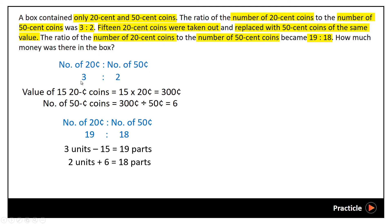Some of you might be wondering why do I want to use units and parts, instead of units and units? The reason is because the value of 1 unit here would be different from 1 unit here. So if we were to give them the same name, we would actually be confused. So in order to make things clearer, we would use units to represent this in the beginning and we use parts to represent all this in the end.